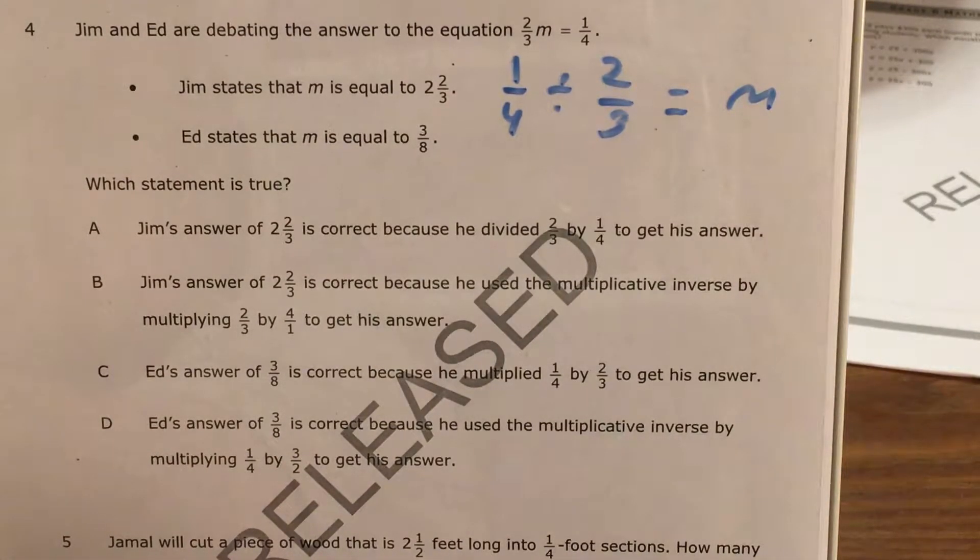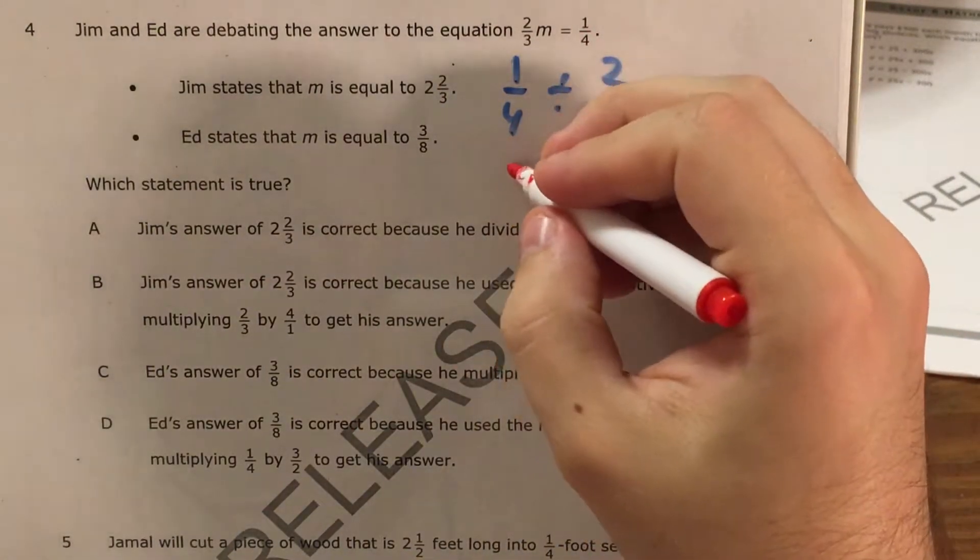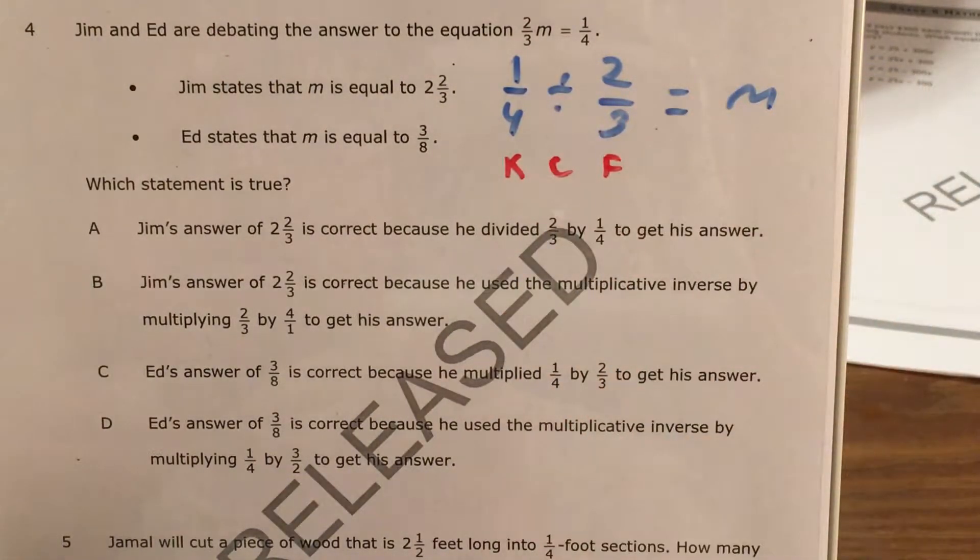So anyway, if I want to take one-fourth and divide it by two-thirds, now what I need to do is I need to use my keep change flip method. Now, if you are a fan of Kentucky Fried Chicken, you might be getting very hungry right now, but we're still doing math, so don't go get your bucket or whatever they sell just yet.